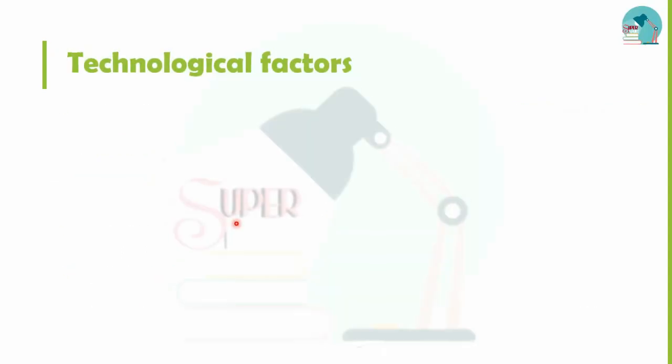Next are technological factors. Technological factors include high-yielding varieties of seeds, chemical fertilizers, insecticides, and machinery.